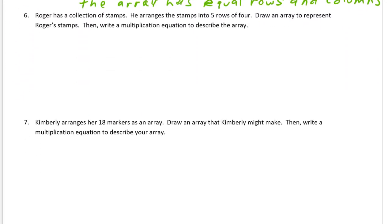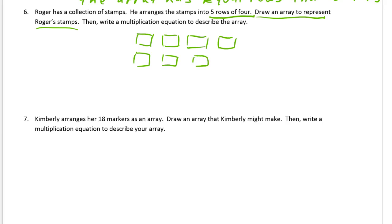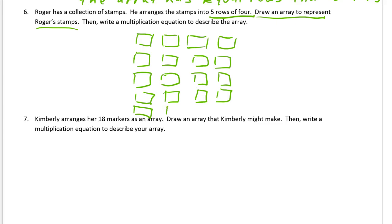And we'll move on to number six. Roger has a collection of stamps. He arranges the stamps into five rows of four — so these are stamps like you put on letters to mail them. We're going to draw an array to represent Roger's stamps: five rows of four squares. I'm going to start with just one row of four first: one, two, three, four. And now we need five of these rows. This is three rows, this will be four rows of four, and here's my fifth row of four. They're not perfect squares but that's okay — it's an array.